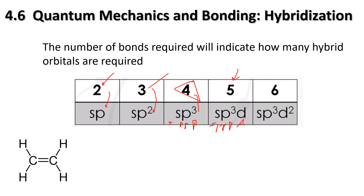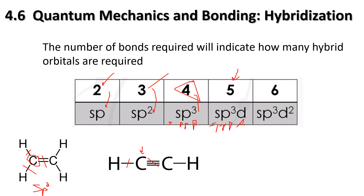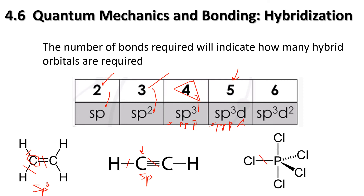Looking at some quick examples: a carbon with three bonds (one single, one double) needs sp² hybridization. For a triple bond, looking at that carbon with two bonds, it needs sp hybridization, giving a linear shape. And from the PCl₅ example, with one, two, three, four, five bonds, we need five letters: sp³d hybridization - five orbitals, five letters, five bonds.